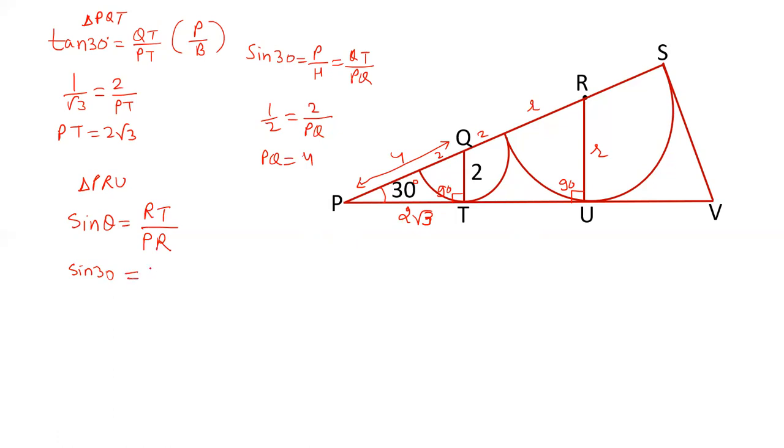Sin 30 is RU upon PR. RU is r. PR is 4 plus 2 plus r. PR is PQ plus QR. That is PQ is 4 and QR is 2 plus r. And sin 30 is 1 by 2. 6 plus r cross multiply. So 2r is equal to 6 plus r. That is r is equal to 6. So this radius is equal to 6. This radius is also 6. And this is also radius, so this is also 6.